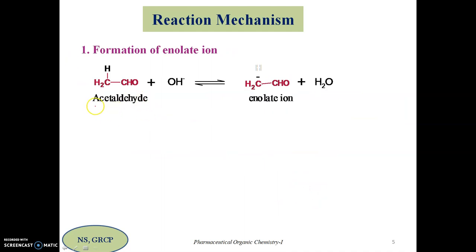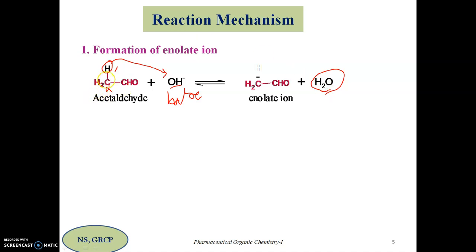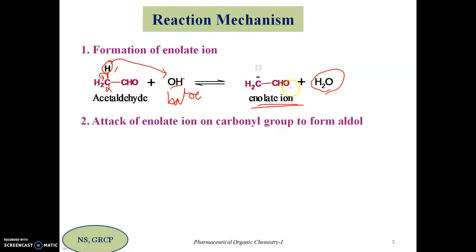Let us see this mechanism using the first example — two moles of acetaldehyde. Step one is formation of the enolate ion. The OH minus from sodium hydroxide acts as a base and abstracts the alpha hydrogen from acetaldehyde, forming water as a byproduct. The bonded pair of electrons is retained on carbon, giving CH2 minus CHO — this is the enolate ion, which is a nucleophile.